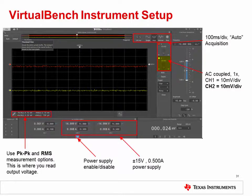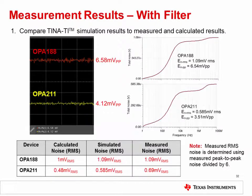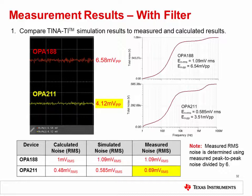In the VirtualBench front panel, change the vertical scale of channel 2 to 10 millivolts per division; all other settings remain the same. The expected output voltage noise results from the measurement with the filter are shown here. The OPA188 has a measured noise of 6.58 millivolts peak to peak or 1.09 millivolts RMS, and the OPA211 has a measured noise of 4.12 millivolts peak to peak or 0.69 millivolts RMS. Like before, the calculated, simulated, and measured results all match quite closely.